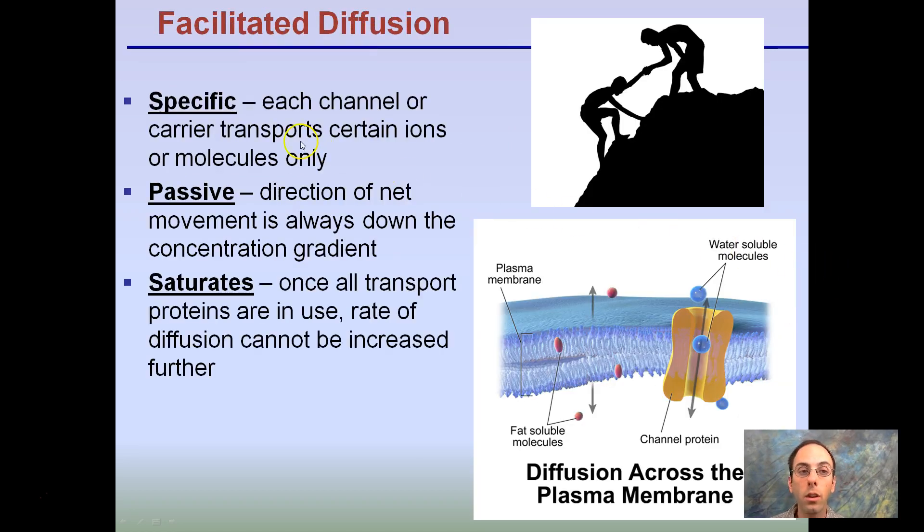So, the last part of our facilitated diffusion. It's specific. Each channel is specific to transport certain ions or molecules only. Passive. The direction of net movement is always down the concentration gradient and saturates. Once all transport proteins are in use, the rate of diffusion can no longer increase beyond that point. So, it varies specifically in helping students. It's passive. It's down always the concentration gradient from an area of higher concentration to lower, and saturates. All the transport proteins are in use. That's as quick as the rate can go. If all the teachers are busy helping students, that's as quick as we can help people.